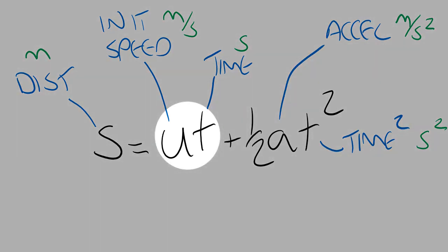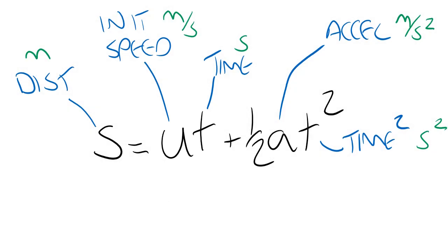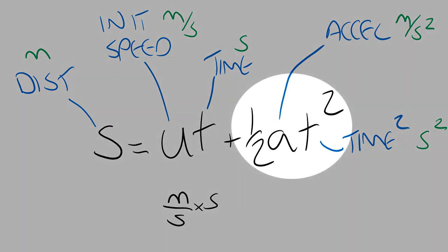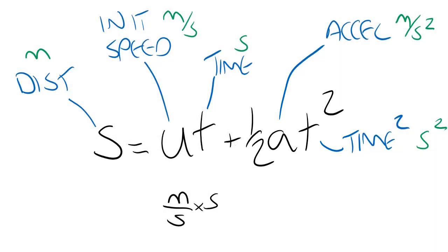In this first part of the equation, where we've multiplied u by t, then the units will be combined in the same way, so it'll be meters per second multiplied by seconds. And then in the second part of the equation, this half coefficient has no units, so we'll ignore that. And then the other units go together as meters per second squared multiplied by seconds squared.